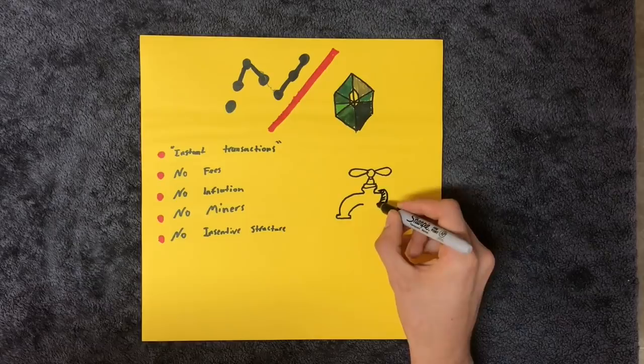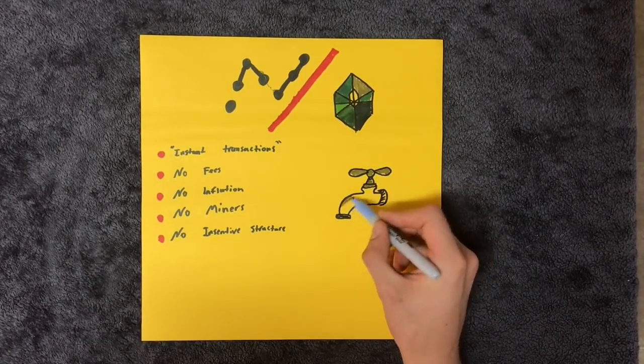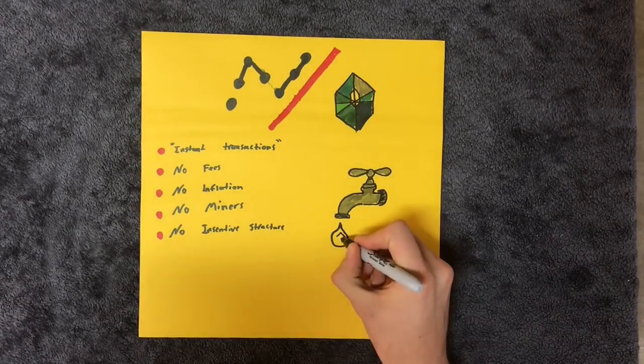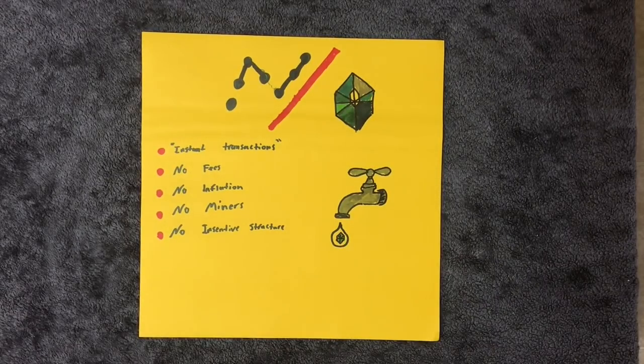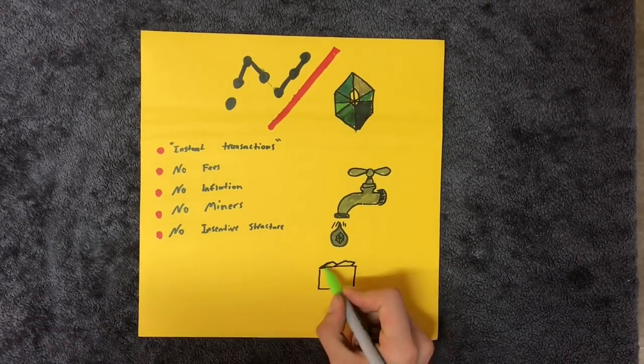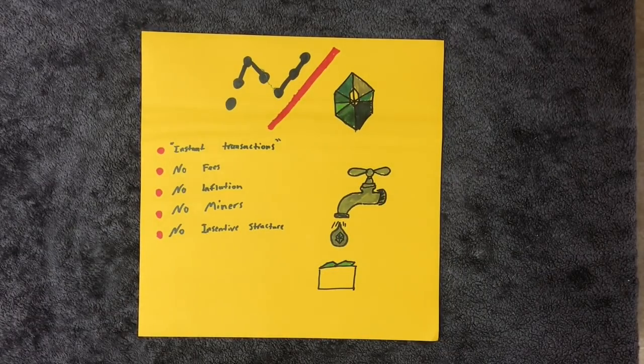The distribution of the coin was not done with an ICO, airdrop, or by proof-of-work. Raiblocks were distributed with faucets. A faucet is a website where you simply fill out a CAPTCHA to prove that you aren't a bot. And in return, a small amount of cryptocurrency is sent to your wallet for free.